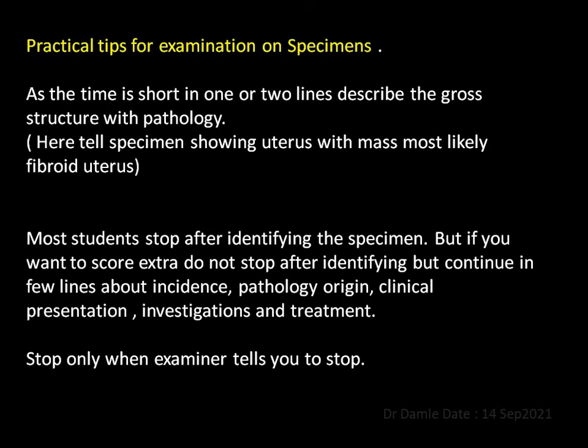Some practical tips for examination on a specimen: as the time is short, in one or two lines describe the gross structure with pathology. Tell the examiner the specimen is showing a uterus with mass, most likely fibroid uterus. Most students stop after identifying the specimen, but if you want to score extra, do not stop after identifying — continue in a few lines about the incidence, pathology, origin, clinical presentation, investigations, and treatment. Stop only when the examiner tells you to stop.